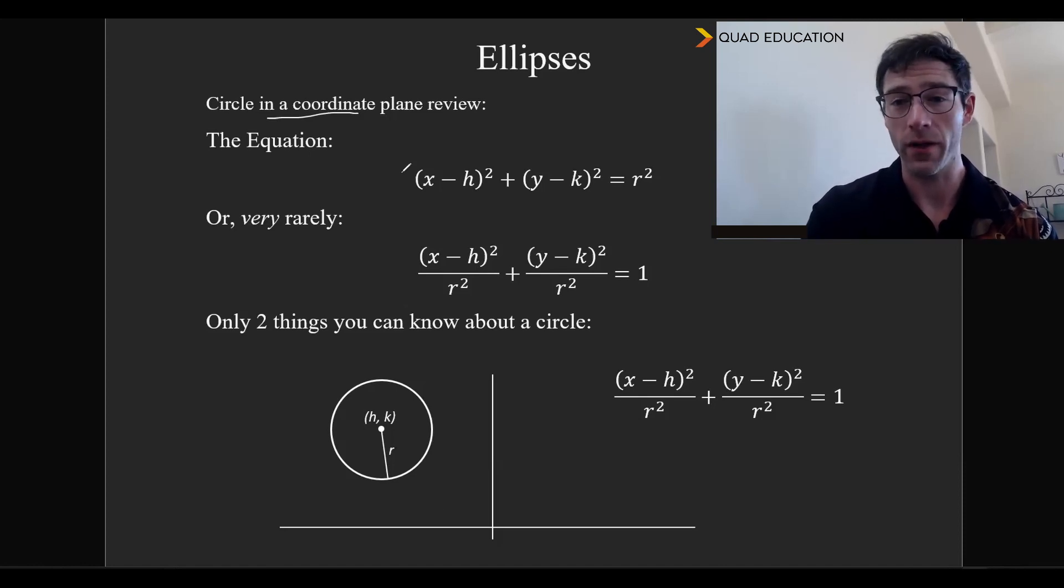The equation for that to review is (x - h)² + (y - k)² = r². The h is going to tell us where the x-coordinate of the center is, the y minus k is going to tell us where the y-coordinate of the center is, and then the r is going to tell us the size of the circle, and that the r is the radius squared.